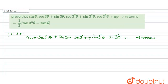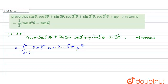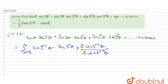Here we can write this as a summation where r goes from 1, giving sin(3^(r-1)θ) · sec(3^r θ). We are multiplying and dividing by 2 just to balance this equation. So here we can write 1/2 times the summation.